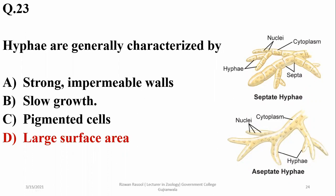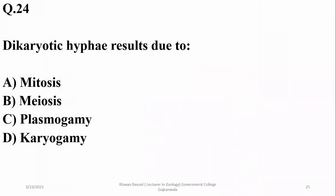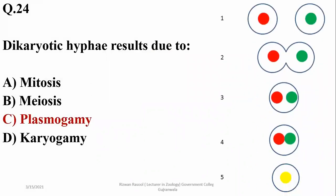Dikaryotic hyphae result due to plasmogamy, which is the first stage in the fusion process or conjugation process of fungi.